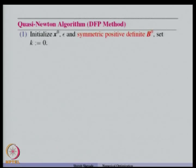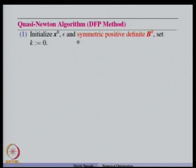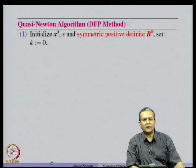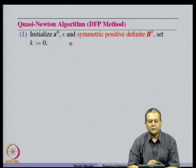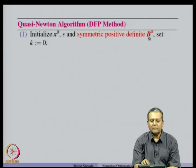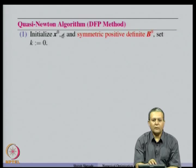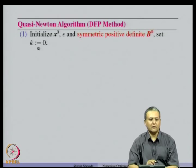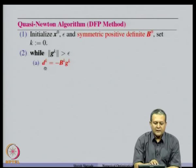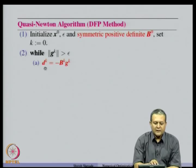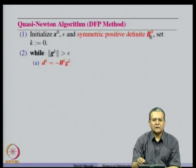Let us see how the algorithm looks when we use the DFP method in our quasi-Newton algorithm. Compared to other approaches, what we need here is a symmetric positive definite matrix B_0 to start with, along with the initial point, stopping tolerance, and iteration counter set to 0. While the norm of the gradient is greater than ε, we set the direction d_k to be −B_k·g_k. Initially if we have no knowledge about the problem, we could use B_0 as the identity matrix.